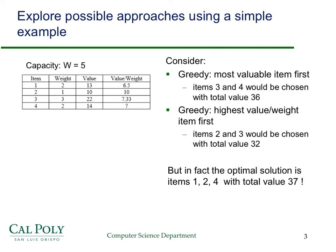Using the greedy approach of taking the most valuable item first, you pick items three and four: item three is the most valuable at 22, and item four at 14, giving a total value of 36. The highest value-to-weight ratio approach gives items two and three, taking up four kilograms, with a total value of 32. But the optimal solution is actually items one, two, and four, with a total value of 37: they fit exactly at weight five, and you get 13 plus 10 plus 14.